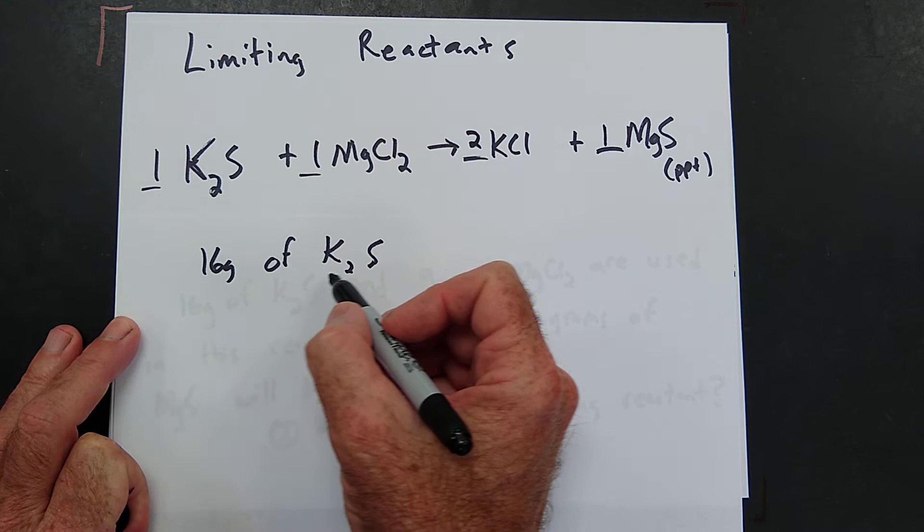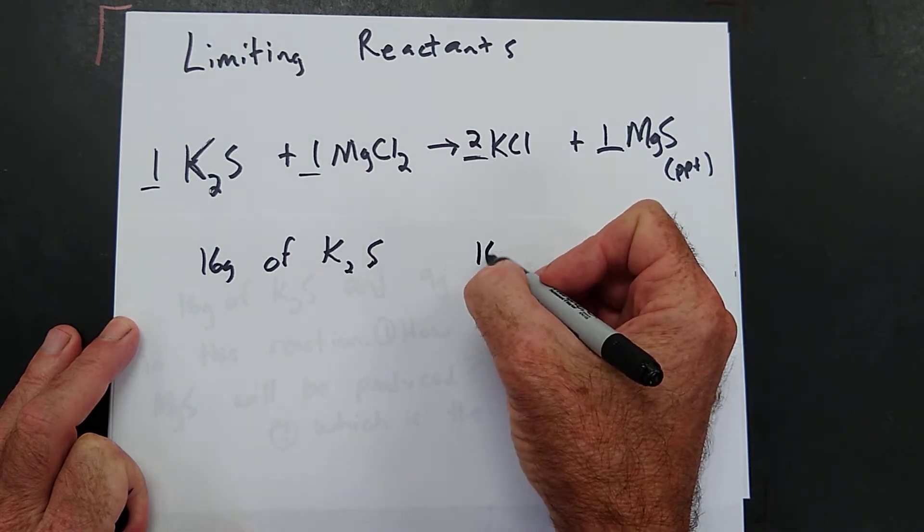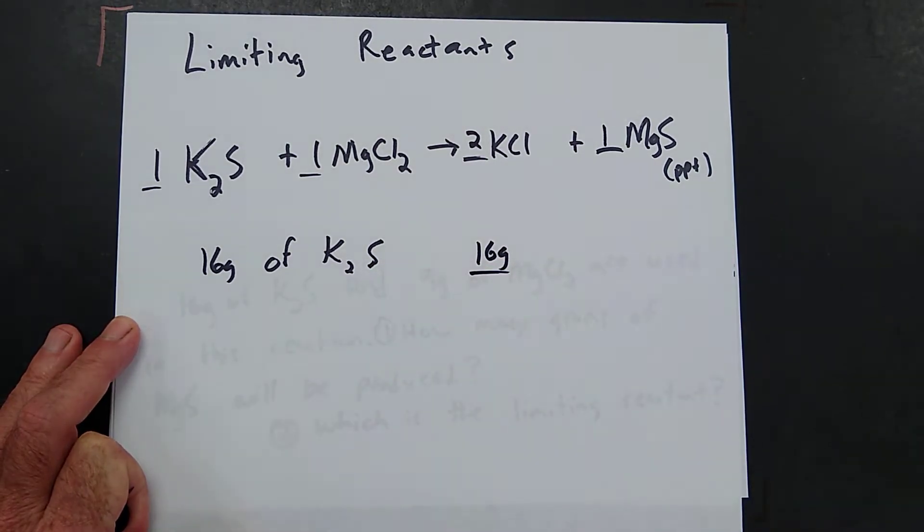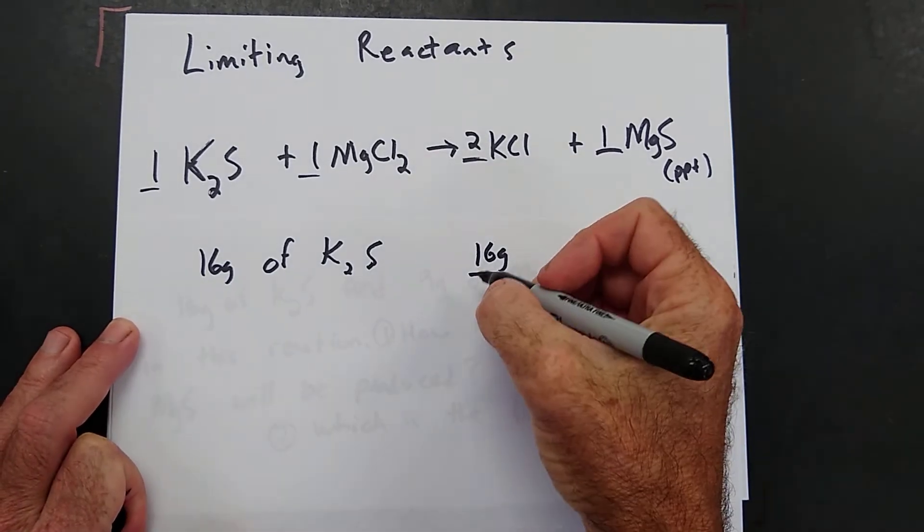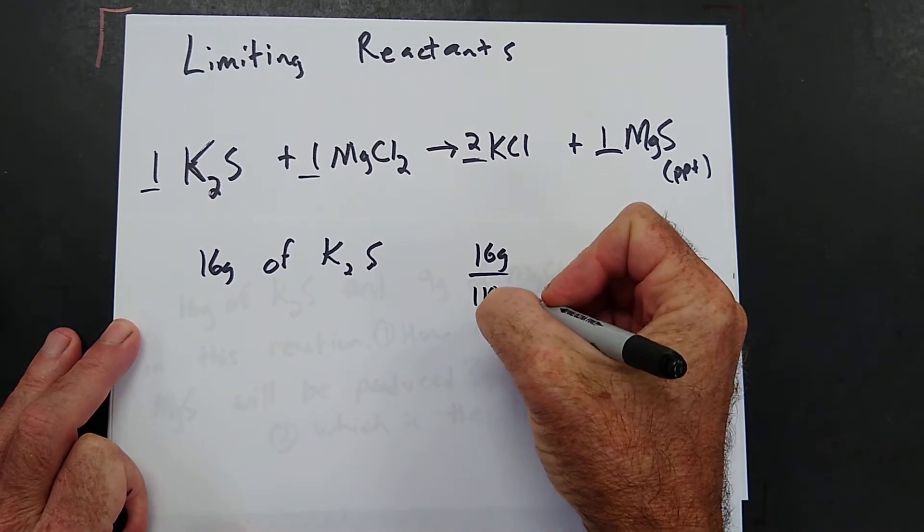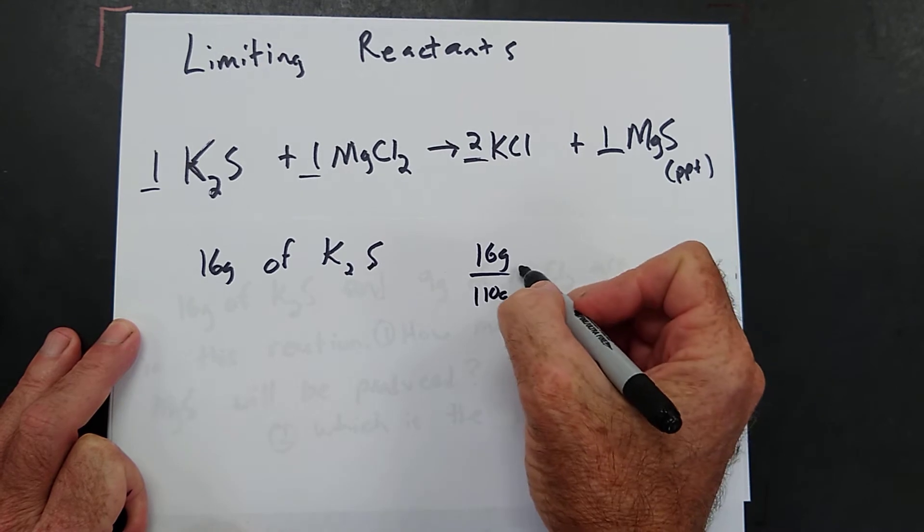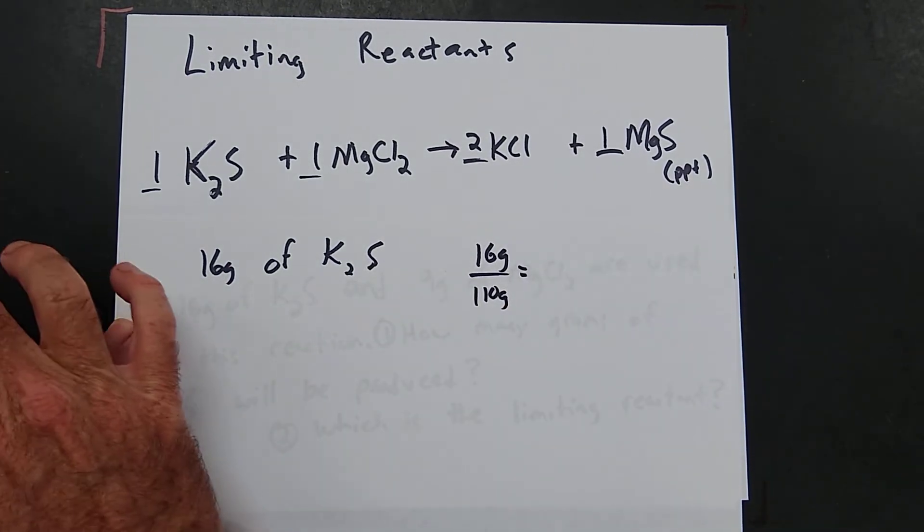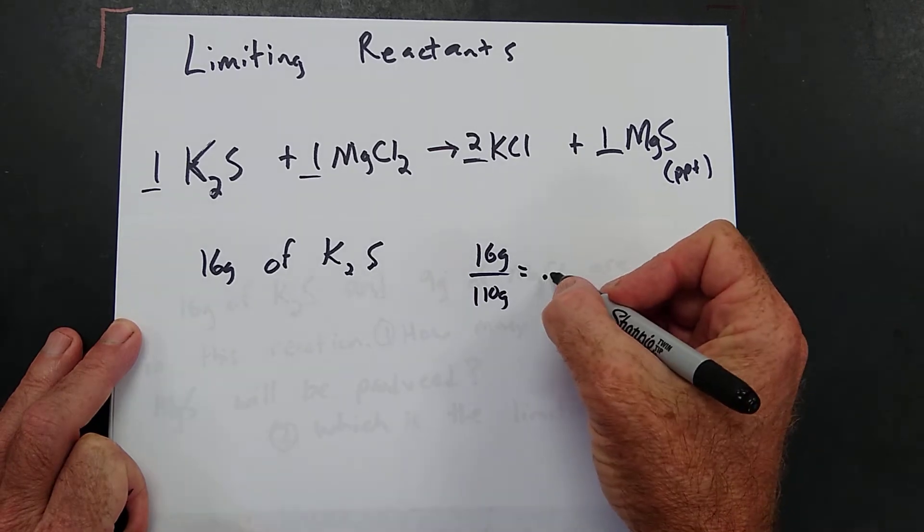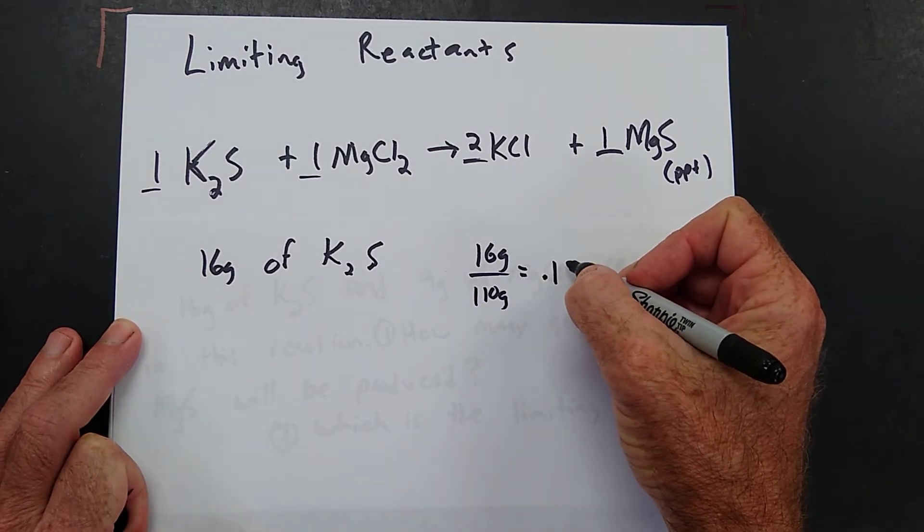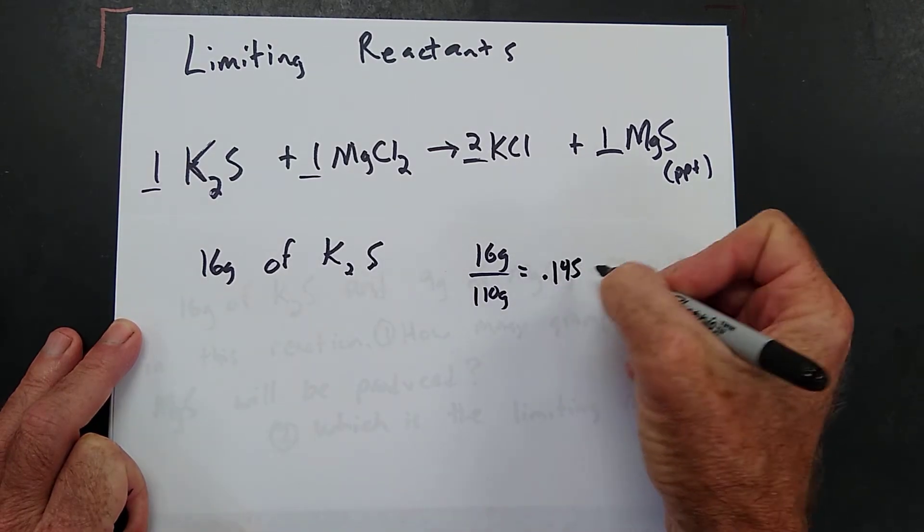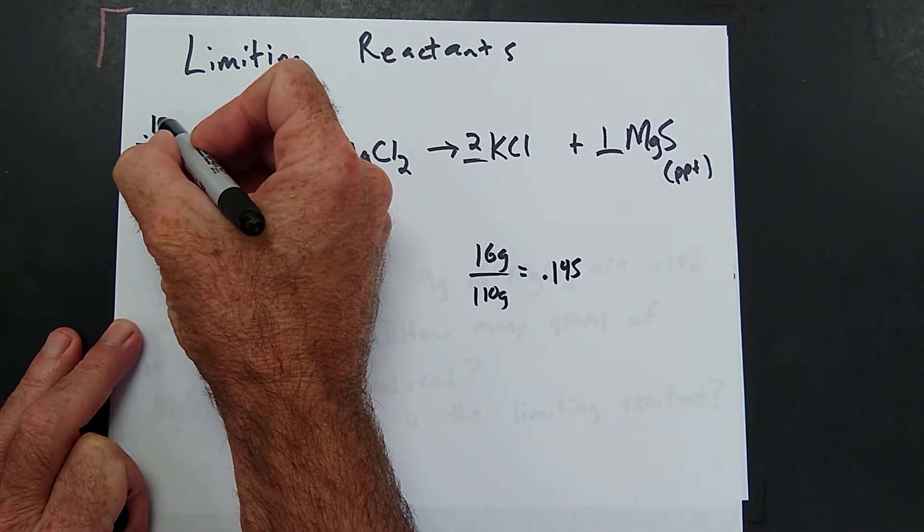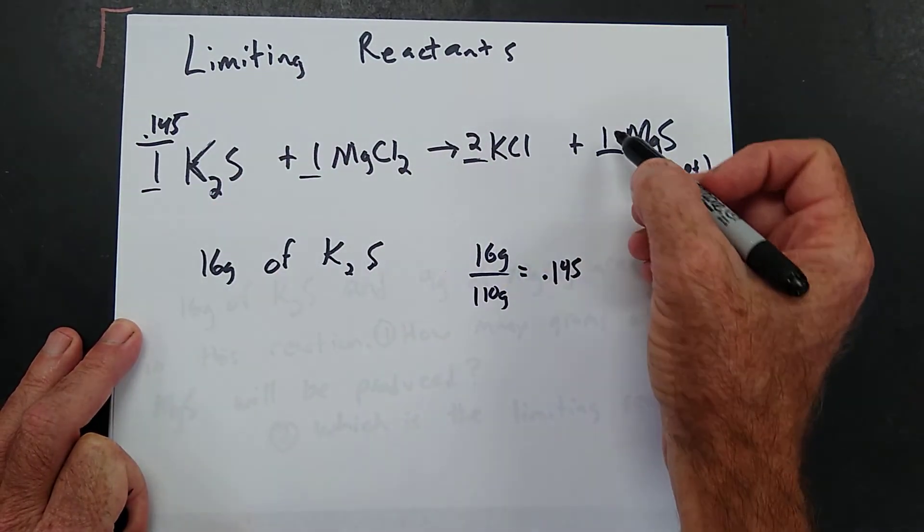16 grams of potassium sulfide. We're going to change that to moles. So we're going to say 16 grams divided by 110 grams because that's what K₂S weighs.